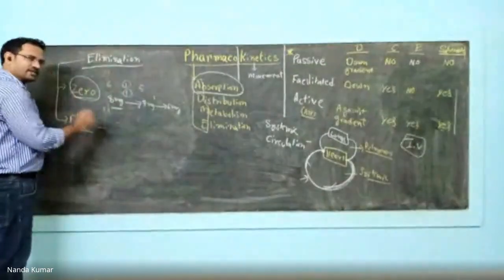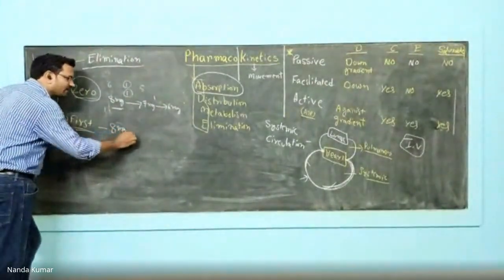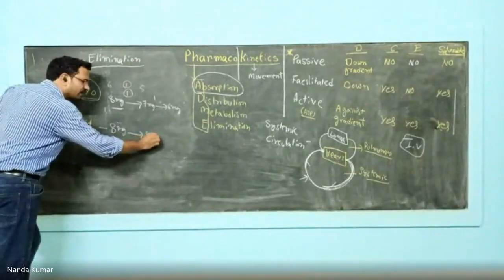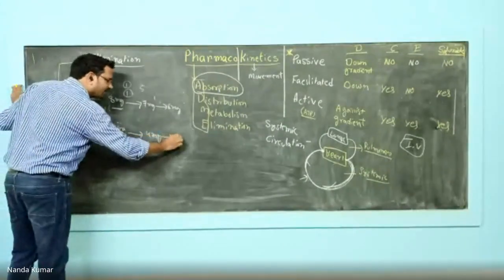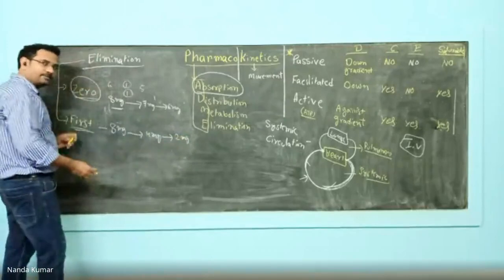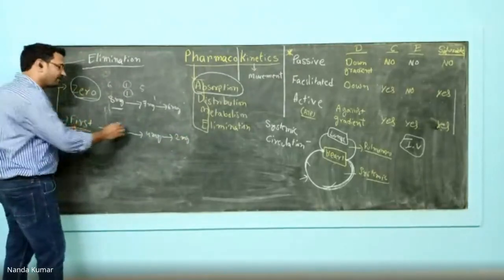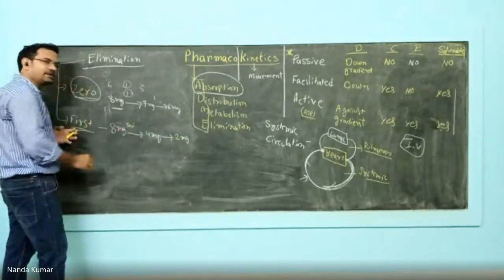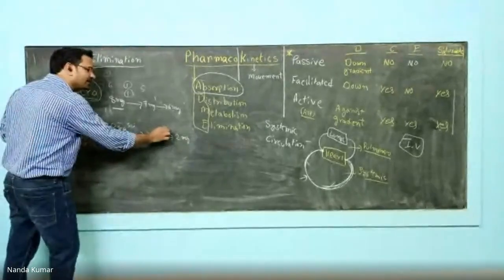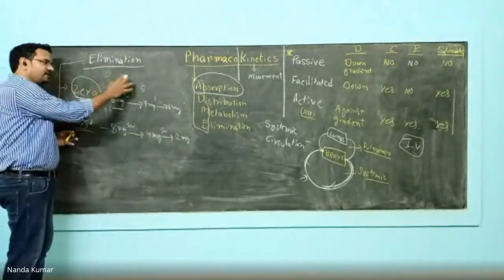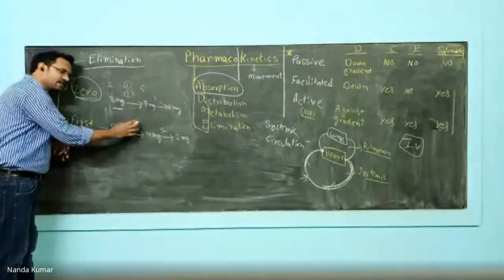In the case of first-order kinetics, see what happens. If someone is taking 8 mg of drug, it becomes after a particular period 4 mg, then it becomes 2 mg. What is happening? A constant fraction - 50% is getting eliminated, again 50% is getting eliminated.